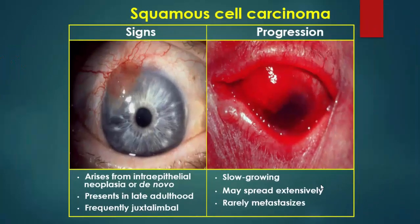Squamous cell carcinoma arises from intraepithelial neoplasia or de novo, presents in late adulthood and is frequently just limbal. It is a slowly growing tumor that may spread extensively and rarely metastasizes.